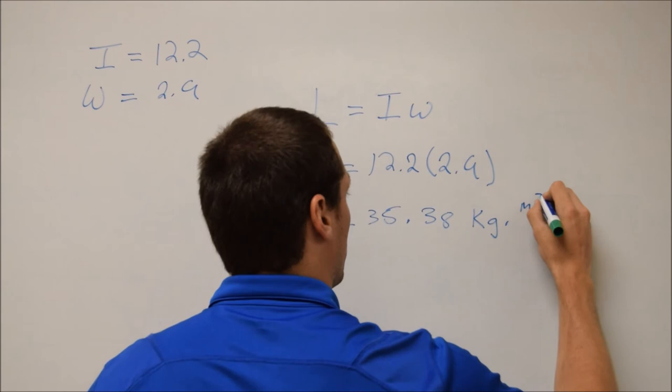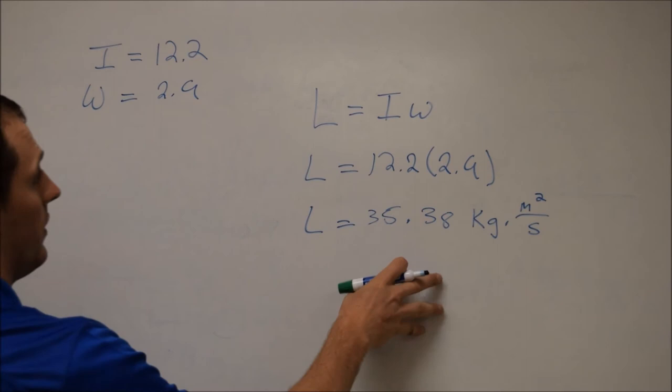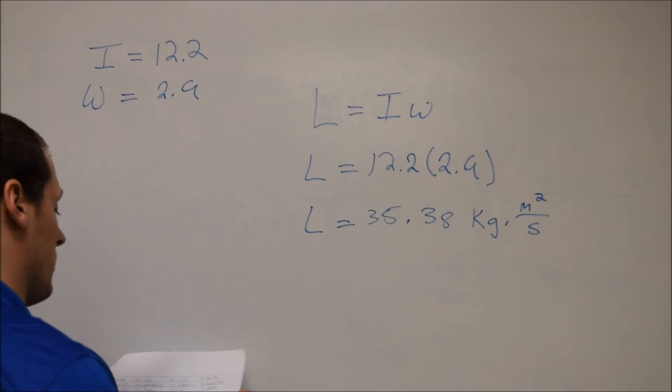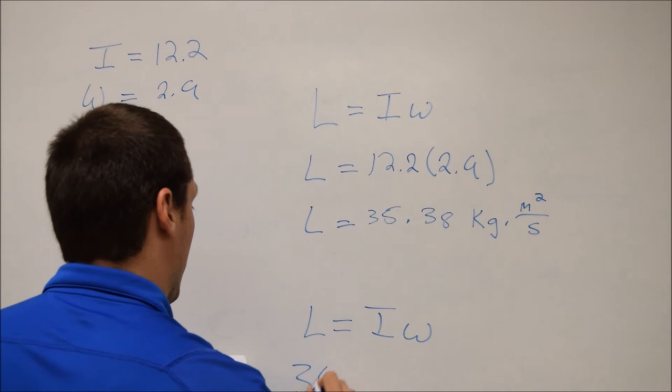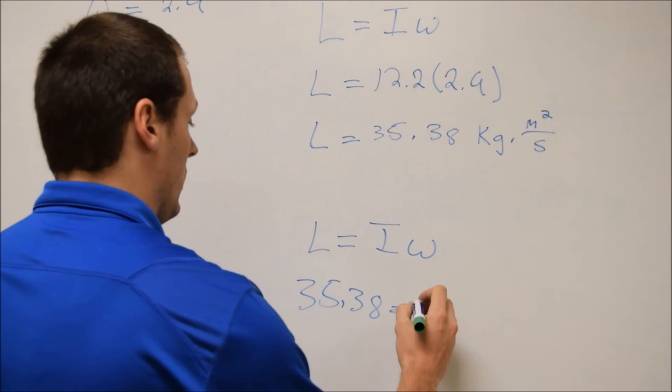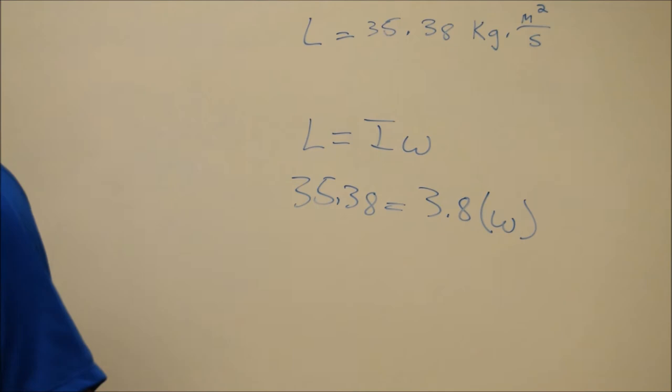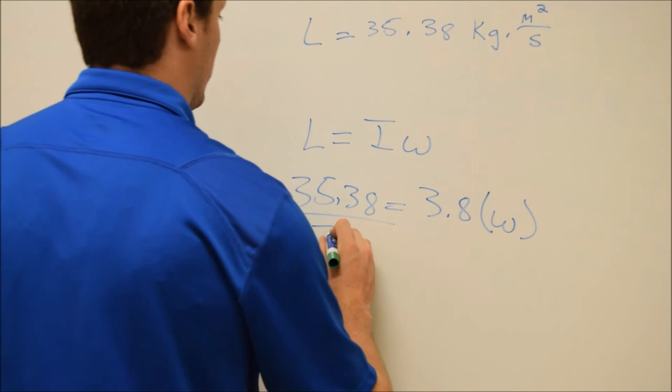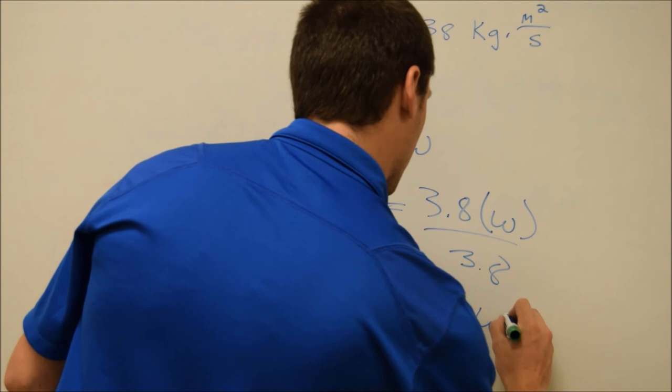And so the next thing that we need to do is while the diver's in the air, we need to assess their angular momentum as well as their angular velocity. So now we're going to do the same thing that we did here just with different numbers. So we've solved for our angular momentum, so we're going to use the angular momentum that we got for this next part here. So we'll put in 35.38 is equal to the moment of inertia, which is given in the problem as it changes, to 3.8 times the angular velocity, which we don't yet know. And so all we'll do here is just take this guy and divide each side by 3.8. And then we end up with 9.31 radians per second is equal to the angular velocity.